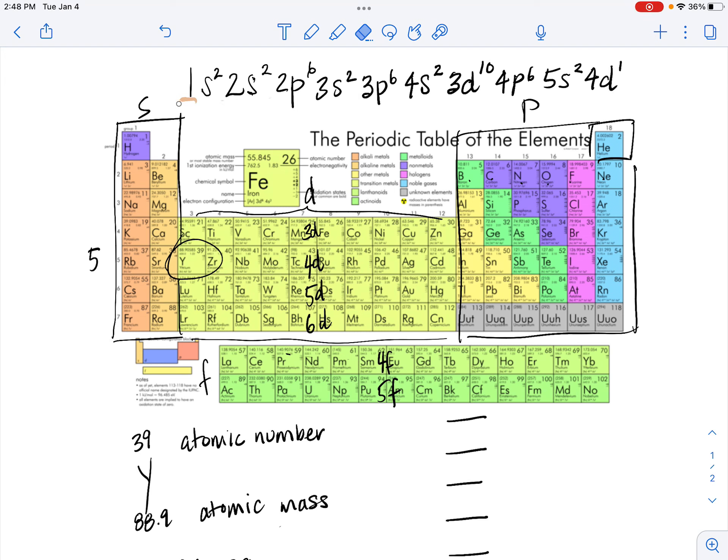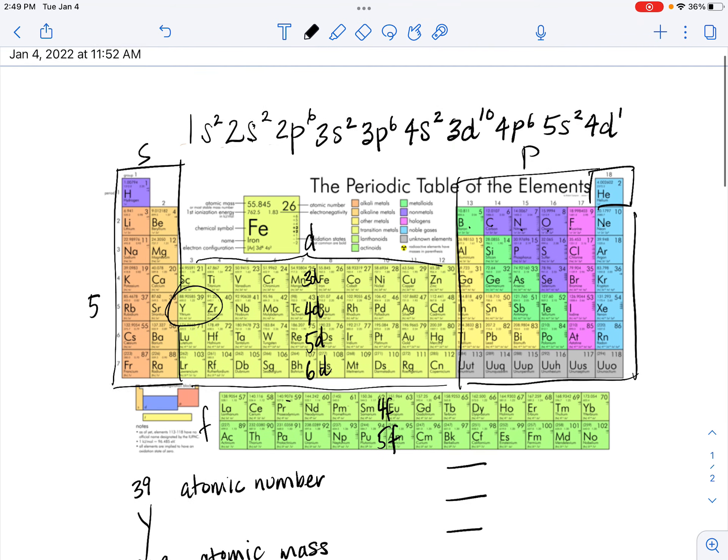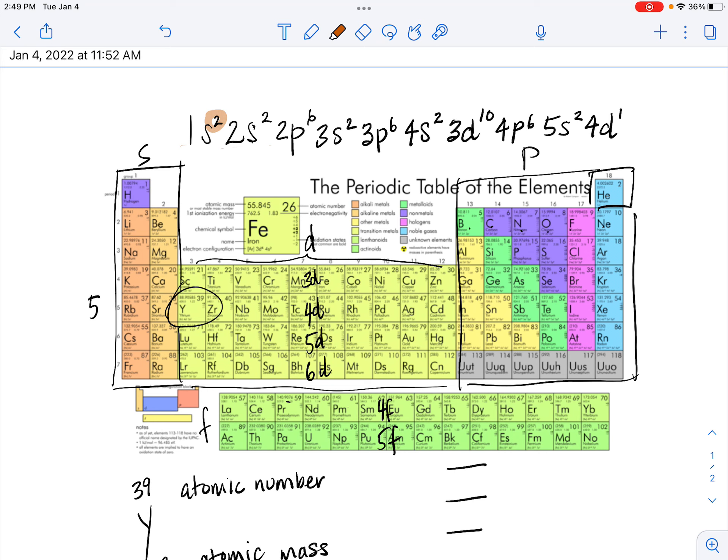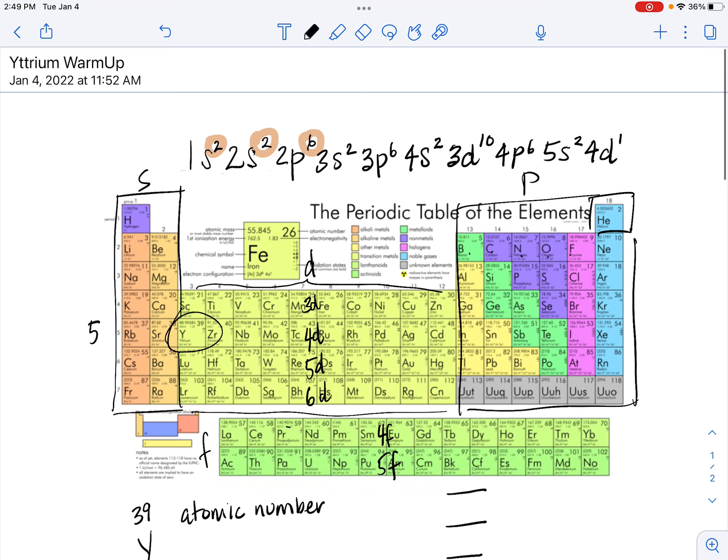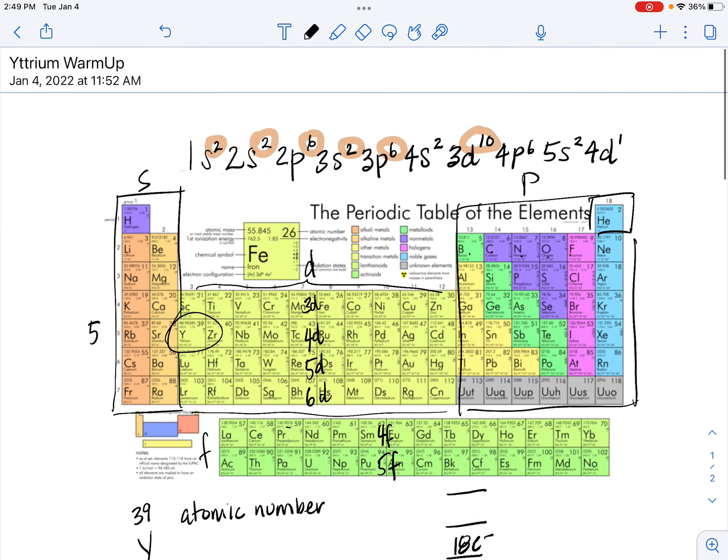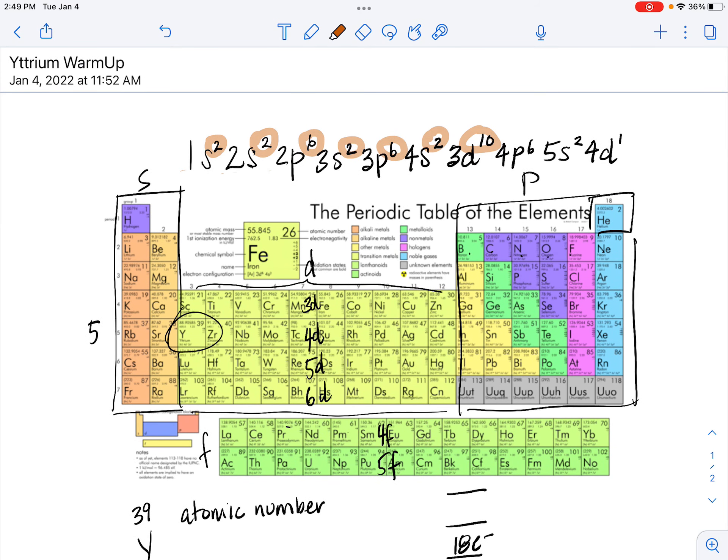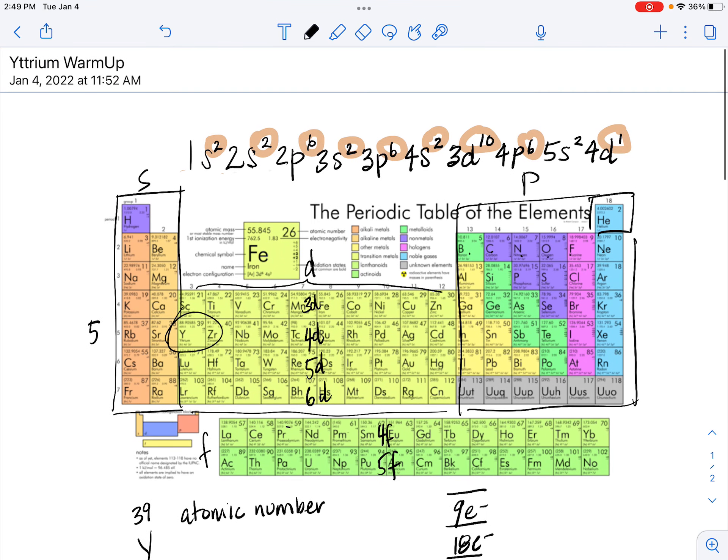We can now take that electron configuration, and we can use it to draw a modified Bohr model. So we know that in the first energy level, which is the energy level closest to the nucleus, there are 2 electrons. How do I know that? There it is. In the second energy level, we have 2 plus 6 electrons for a total of 8. In the third energy level, we have 2 plus 6 plus 10 electrons for a total of 18. In the fourth energy level, we have 2 plus 6 plus 1, a total of 9. And in the fifth energy level, we have 2.